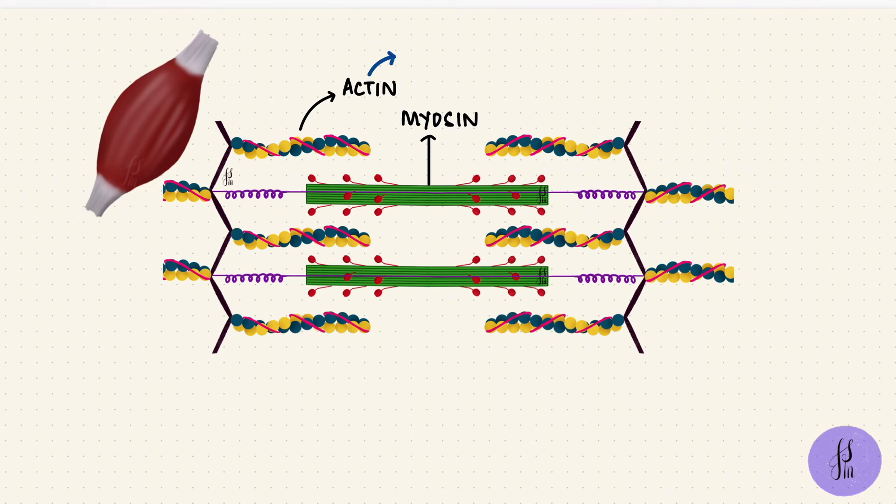But remember that thin filaments are microfilaments because they've got actin. Thick filaments are myosin. Now let's move on to intermediate filaments. Intermediate filaments are called intermediate because their diameter is between that of thin and thick filaments. They're around 8 to 10 nanometers.